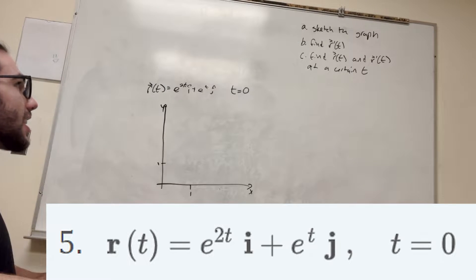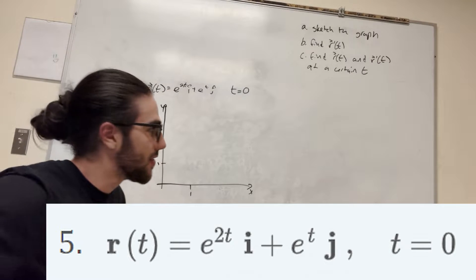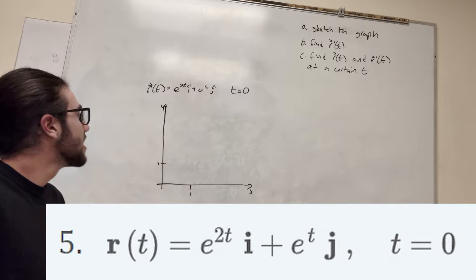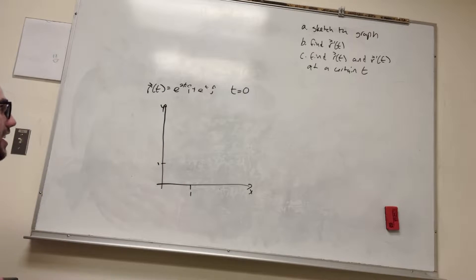What's up Cal gang? Alright, we got some sketching, some functions with respect to t, so let's give this a shot. It gives us this function saying r of t is equal to e to the 2ti plus e to the tj.